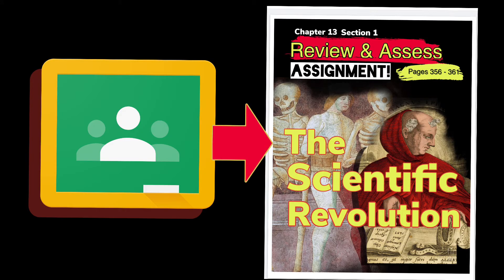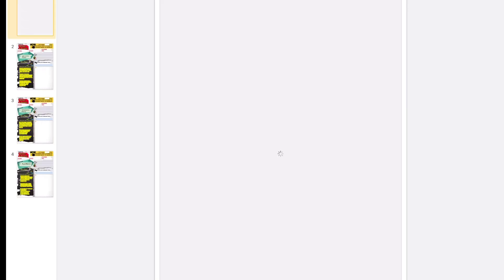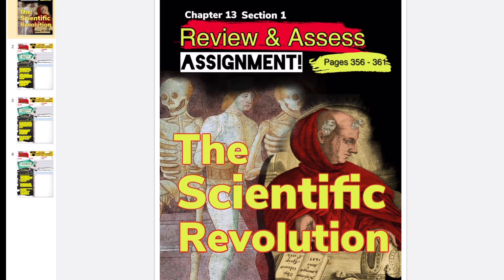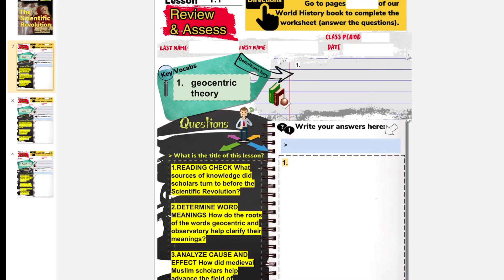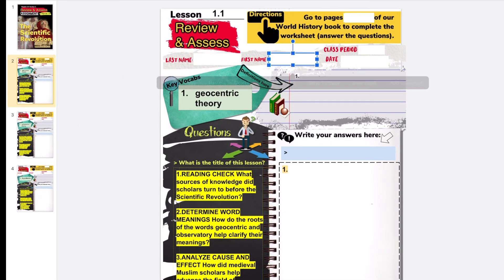Go back to our Google Classroom and find the review and assess assignment for chapter 13, section one, the scientific revolution. You will need to fill in the basic information. You should know this by now: last name, first name, class period, and date. And the key vocab, just one key vocab: geocentric theory. And don't forget to write the title of the lesson. What's the title of the lesson that we just covered? And of course, the answer to the review and assess questions on the right side. Write in complete sentences. Definitely, obviously, you need to give the correct answers and write in complete sentences.